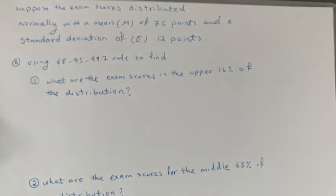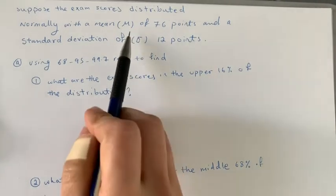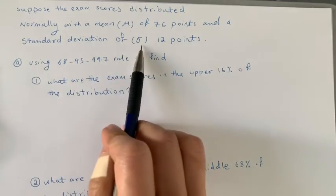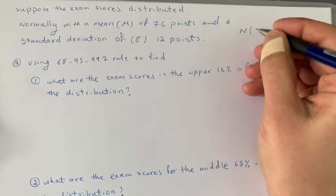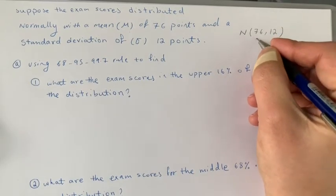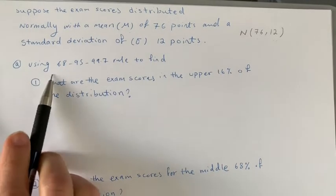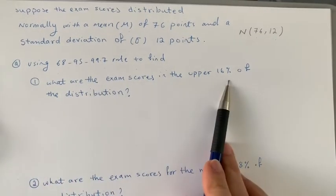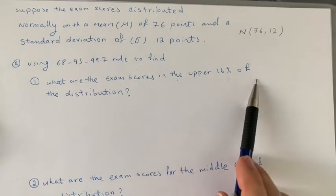Suppose exam scores are distributed normally with a mean of 76 — we show the mean of a normal distribution with mu — and a standard deviation (sigma) of 12. I will represent this normal distribution as N(76, 12), where the first term is the mean mu and the second term is the standard deviation sigma. We'll use the 68-95-99.7 rule to find answers.